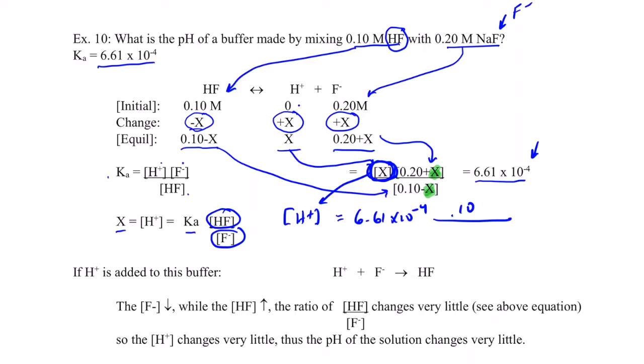and we no longer need to subtract out that X, because it's such a small number compared to 0.10, all over 0.20, and remember we don't have to add the X to it. And so let's see what that turns out to be. So we'll get our calculators out, and let's see, we'll take 6.61 EE to the negative fourth times 0.1 divided by 0.2. We end up with 3.31 times 10 to the negative fourth.